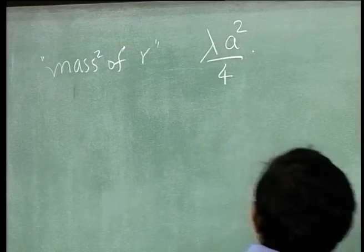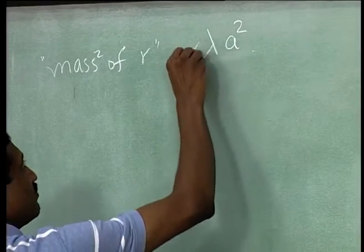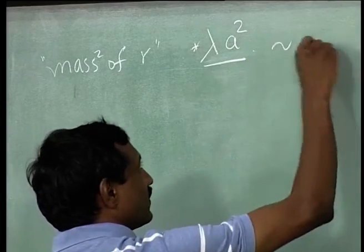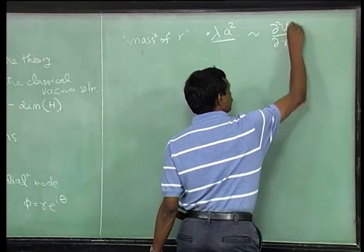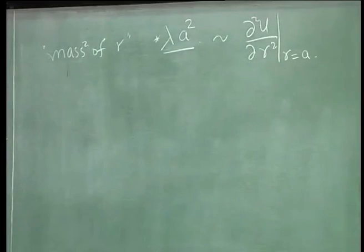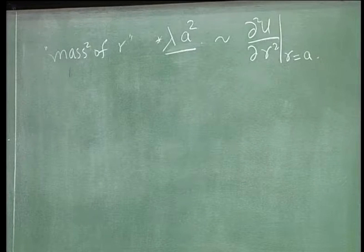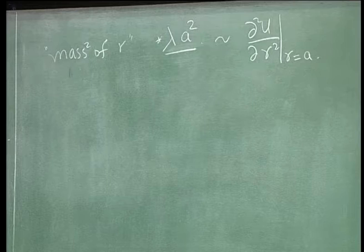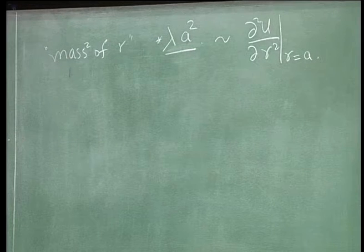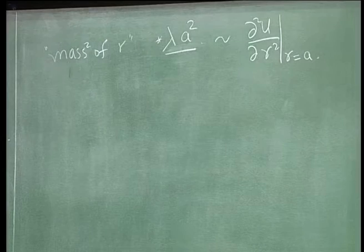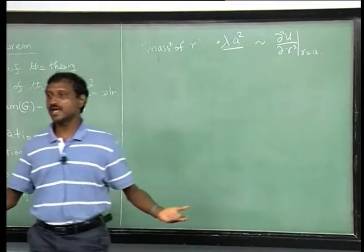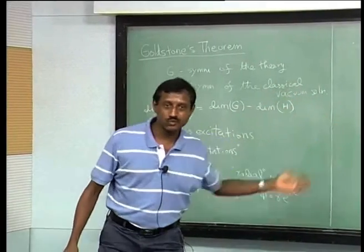The mass squared is some number times λa², which we can think of as the second derivative of the potential at r = a. In quantum field theory, there is a gap of order λa². This is the difference between a gapless excitation and a gapped one. If λa² is very large, those excitations would never be relevant to the energy scales of your problem — you would only look at the massless excitations.